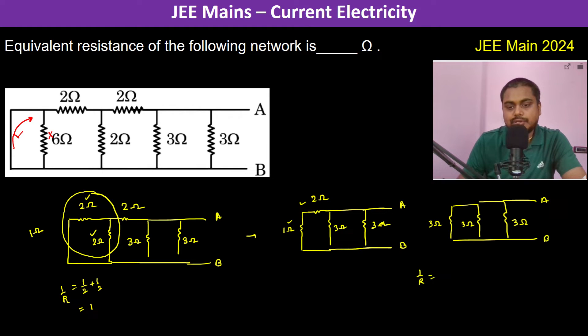So 1 by R is equal to 1 by 3 plus 1 by 3 plus 1 by 3, which is 3 by 3, which is 1 ohm. So therefore the resistance is going to be 1 ohm equivalent resistance.